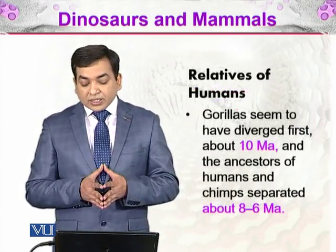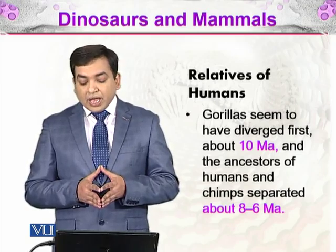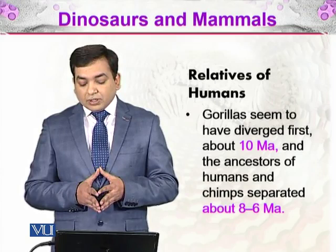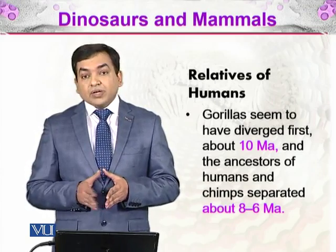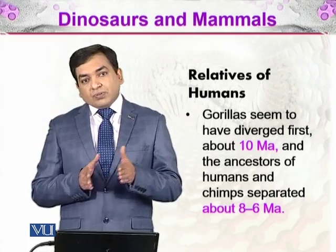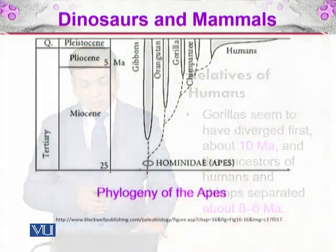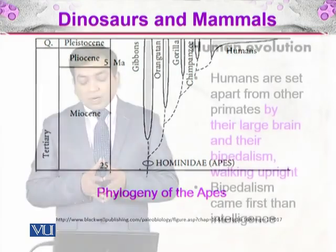Gorilla seems to have diverged first, at 10 million years ago. And the ancestors of humans and chimps separated about 8 to 6 million years ago. That means gorillas are more distant than chimps. The phylogenetic tree shows that chimpanzees are much closer to the humans as compared to the gorillas.